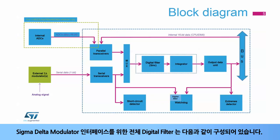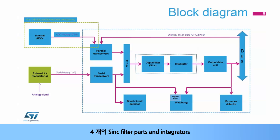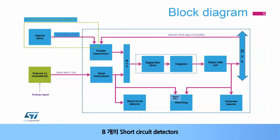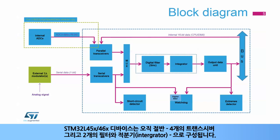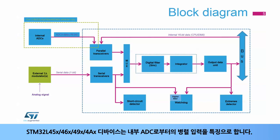The entire digital filter for sigma-delta modulators interface consists of 8 serial transceivers, 4 sync filter parts and integrators, 4 output data units, 4 analog watchdogs, 8 short-circuit detectors, 4 extreme detectors, and 8 parallel data input registers. For STM32 L45X and 46X devices, the configuration is only one-half: four transceivers and two filters and integrators. The STM32 L45X, 46X, 49X, and 4AX devices feature parallel inputs from internal ADCs.